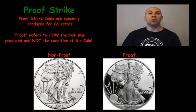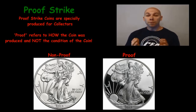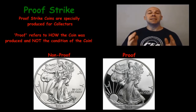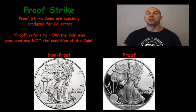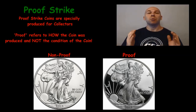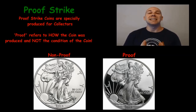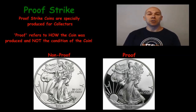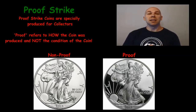Proof strike. Earlier we talked about business struck coins. A proof struck coin means that it was intended for collectors and numismatists and not intended for circulation. The term proof refers to the process that the coin was manufactured in — it does not refer to the condition of that coin. Proof coins are double struck under higher pressure than business struck coins, and the dies are often treated in such a way that it gives the designs a frosted appearance, while the fields of the coin will have a mirror-like finish.